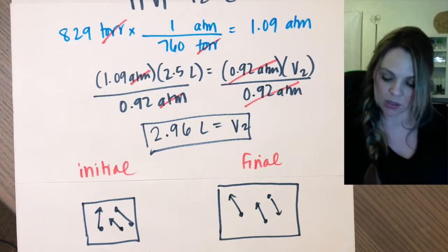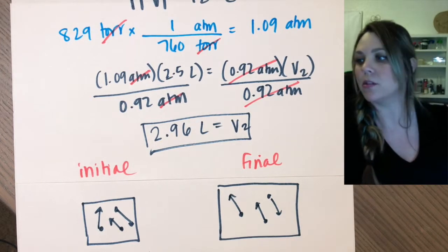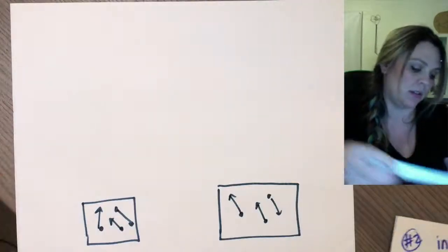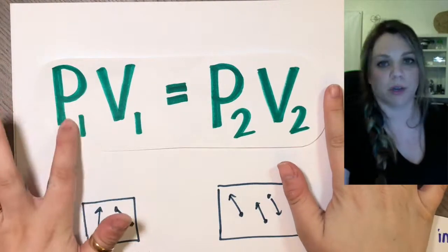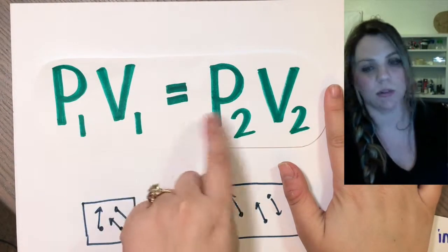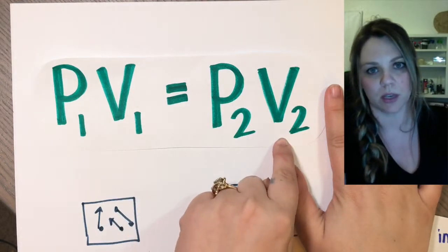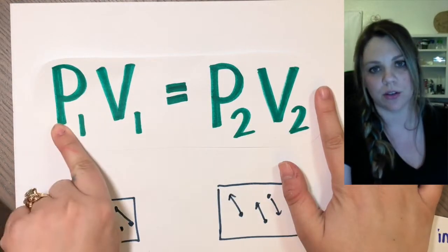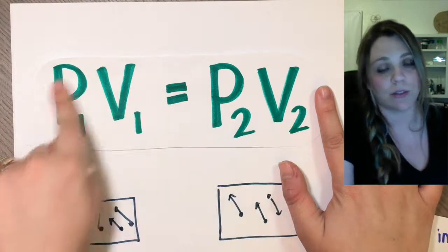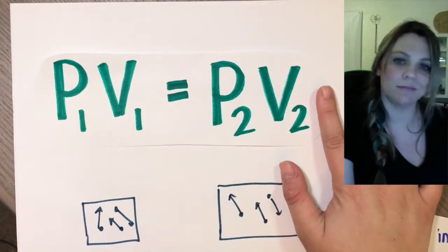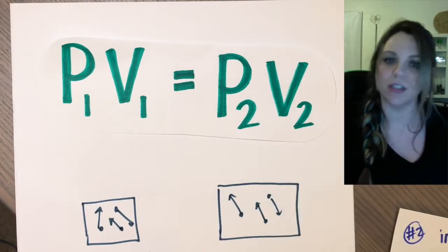That's it. So Boyle's Law is just pressure 1 times volume 1 equals pressure 2 times volume 2. Make sure that you're checking your units to make sure that everything is in the same units. And other than that, it's pretty easy. Good luck.